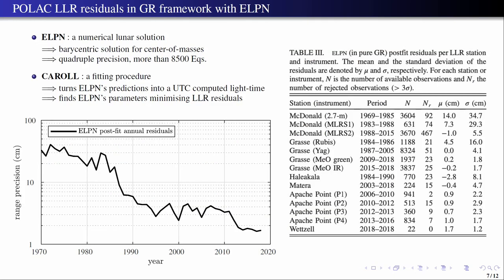And especially tests of Lorentz symmetry. Here are the tools that we have, the numerical tools that we have. ELPN, which computes the lunar solution, so the orbital motion but also the rotational motion of the moon in barycentric reference frame. And we have also this one, CAROL, which is used for fitting the data. So it takes the prediction of ELPN and then makes a computed light time in UTC so that we can make the comparison between the computed light time and the observed one.